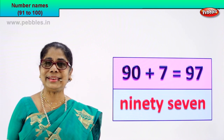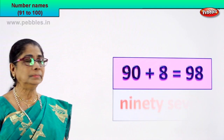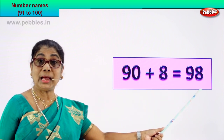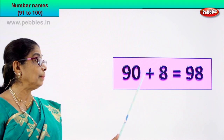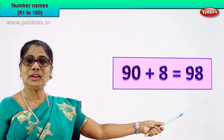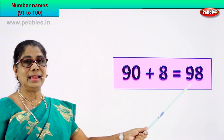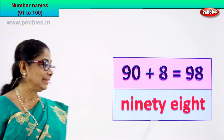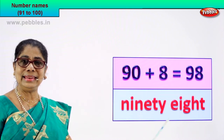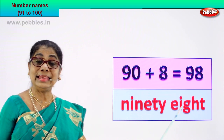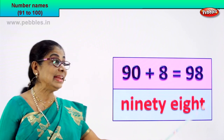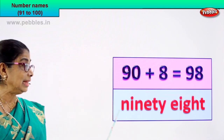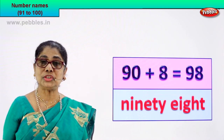Shall we go to the next numeral? 90 plus 8 is equal to 98. You got the numeral — the number is 98. How do we write the number's name? You know to spell 90 and you know 8. 98 — ninety-eight. And its name is ninety-eight. Good!